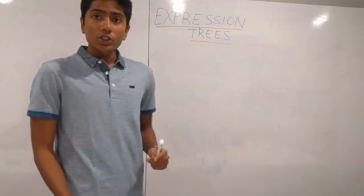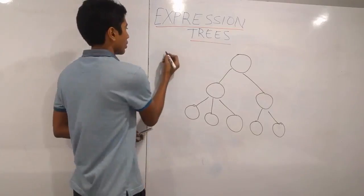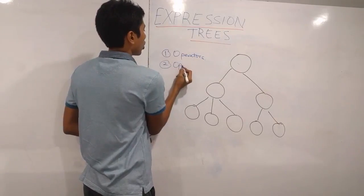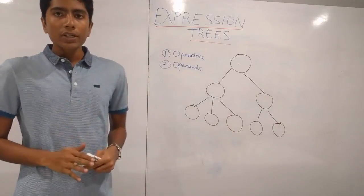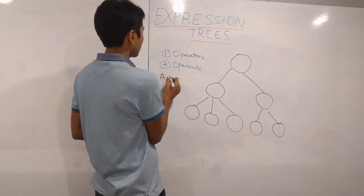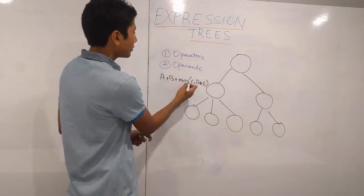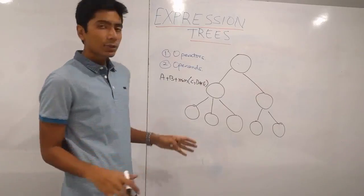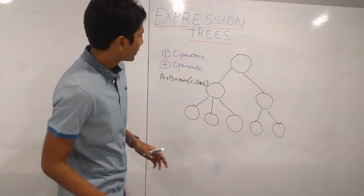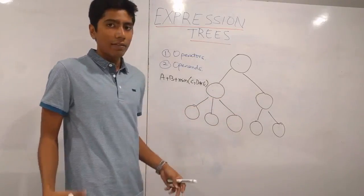Expression Trees are data structures which are trees. This tree is going to have two types of node values: one is operators and the second one is operands. Operands are values who have operations performed on them. If we take an example of A plus B plus the minimum of C comma D into E, then A, B, C, D and E are operands. In an expression tree, you'll always find them in the leaf nodes — you will never find them somewhere up here. That means that the operators are always in non-leaf nodes, always having children with them.